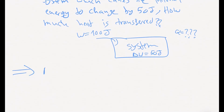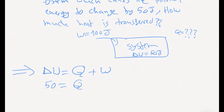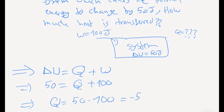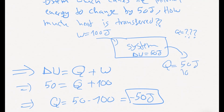First, always write the formula: delta U equals Q minus W or plus W. Looking at the system, 100 joules is being added to it, so I'll use plus W. Delta U is 50, Q is unknown, and plus W is plus 100. Solving for Q: Q equals 50 minus 100, which equals minus 50 joules. The negative sign means the system is losing heat to the surroundings — 50 joules lost.